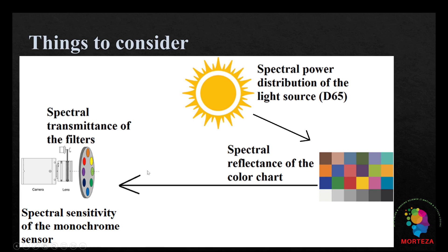These are the important factors we have to consider: the light source, the Macbeth color checker, and the multi-spectral camera system. First, light comes from the light source and hits the Macbeth color checker. The light is then reflected from the color checker, goes through the filters, and hits the sensor inside the camera system, resulting in an image formed using one of these filters. Each filter helps form one image, and when we put together all the images captured with each filter, we get the multi-spectral image.